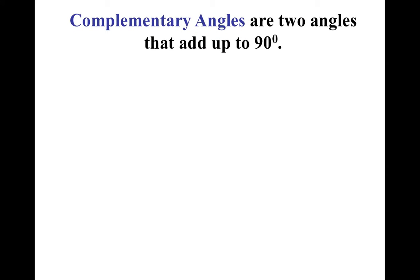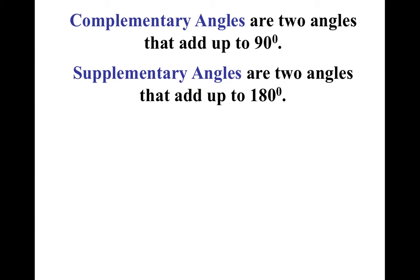Alright, so complementary angles: two angles add up to 90 degrees, where a right angle is one angle that adds up to 90 degrees. So you'll notice that there's just a little tiny thing here. Supplementary angles: two angles add up to 180 degrees. Notice the straight angle was one angle that was 180 degrees. Very, very similar.